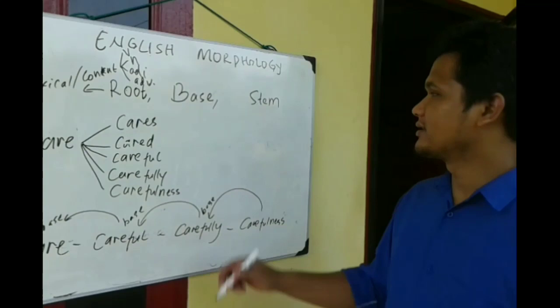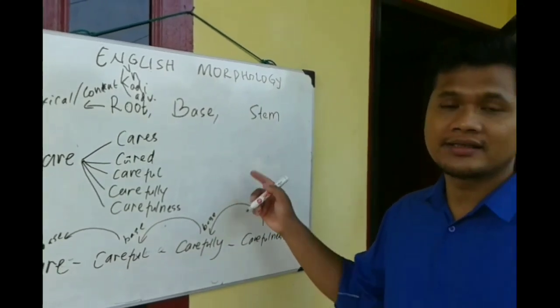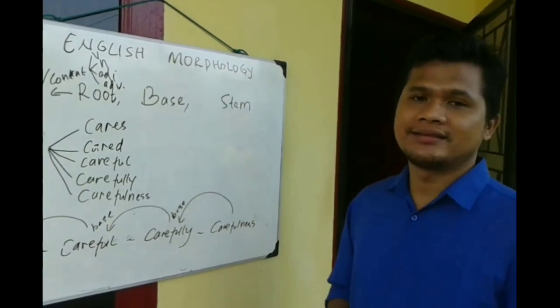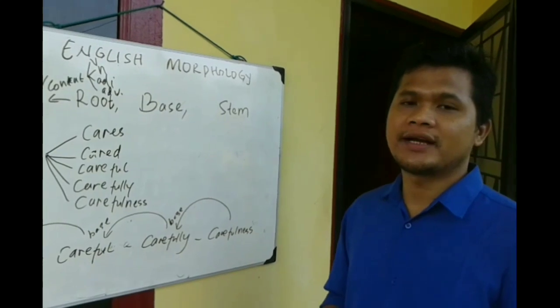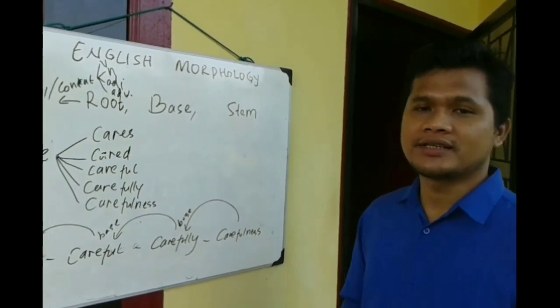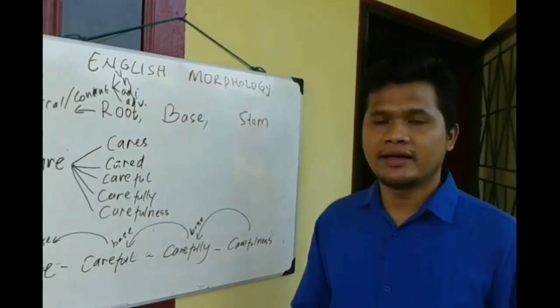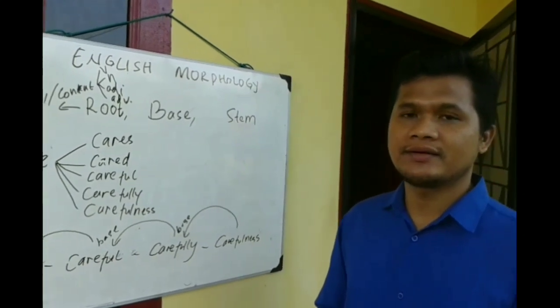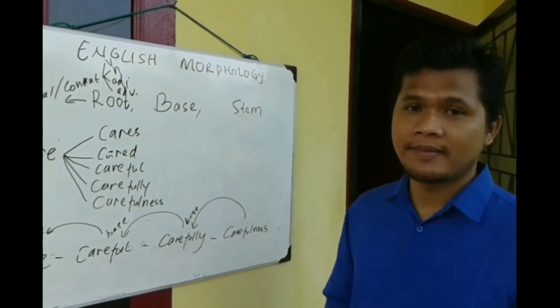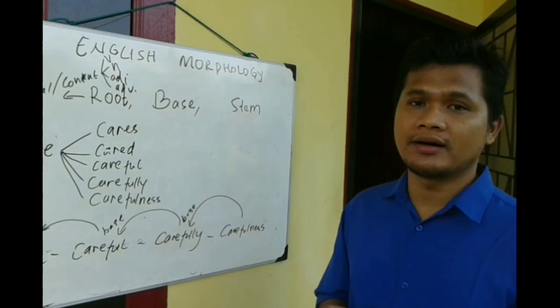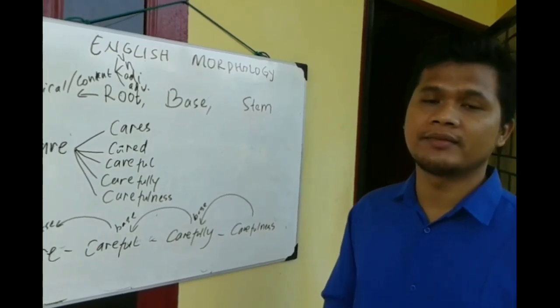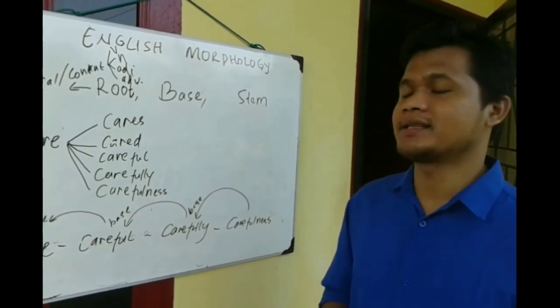The last topic is stem. What is stem? Stem is a word that exists before any inflectional process or before any inflectional affixes. So, just remember inflectional morphology. Remember the changing of a shape word. The changing of word form. It is stem.